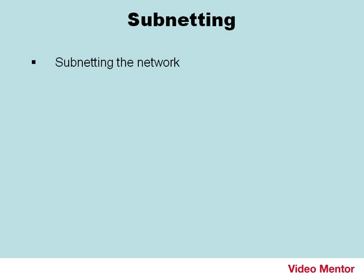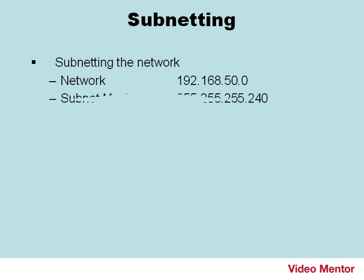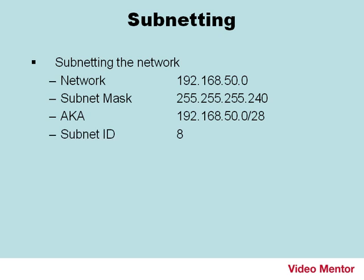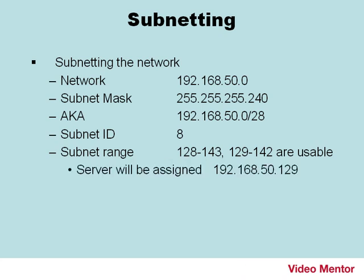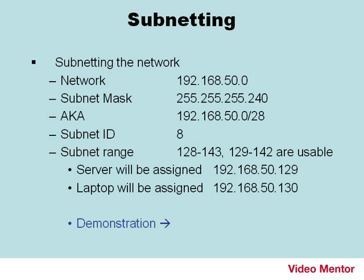Let's go ahead and subnet the network. We're going to use the network number 192.168.50.0 with subnet mask 255.255.255.240, otherwise known as 192.168.50.0/28. The subnet ID I want to use is 8, so the subnet range is 128 to 143, and the usable IPs in that range are 129 to 142. I'm going to assign the server the .129 address and the laptop the .130 address.